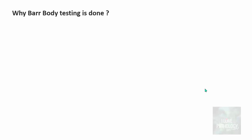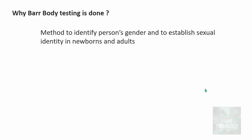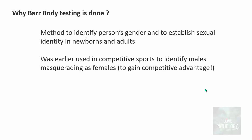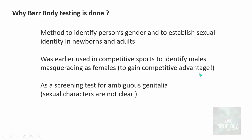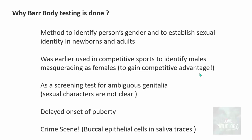What are the indications for testing Bar Bodies? First, it is a method to identify a person's gender and to establish sexual identity in newborns and adults, though not done routinely today. It was earlier used in competitive sports to identify males masquerading as females to gain competitive advantage. It was also used as a screening test for ambiguous genitalia, where sexual characters were not clear, and for cases of delayed onset of puberty. Bar Body testing is also used in forensics at crime scenes — buccal epithelial cells in traces of saliva can reveal whether the suspect is male or female.